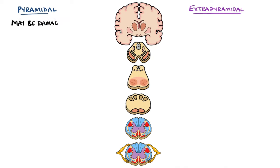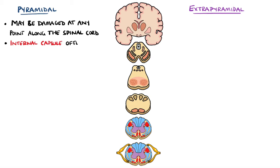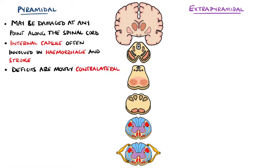Lesions in the pyramidal tracts can result in various deficits at different locations. They can be damaged at any point along the spinal cord and the internal capsule itself. Both corticospinal and corticobulbar tracts pass through the internal capsule, meaning an injury here can affect motor function of the body and of the face. It is particularly susceptible to injury during a hemorrhagic event as this region can become compressed, and it is also a common site for stroke. As the pyramidal tracts primarily decussate, lesions on one side typically lead to deficits on the contralateral side of the body.